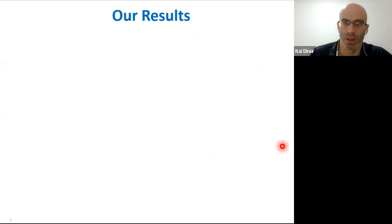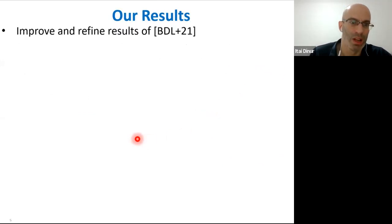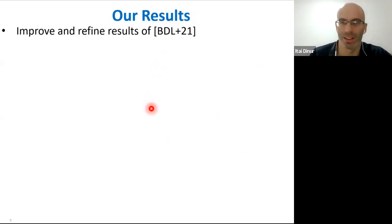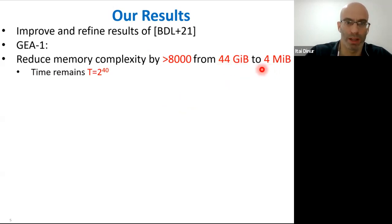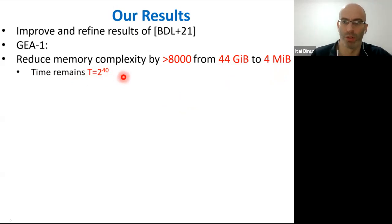Now let's move to our results. What we do in this paper is describe improved and refined attacks compared to the previous paper. For GEA1, we reduce the memory complexity by a factor of roughly 8,000 — from 44 gigabytes down to about four megabytes — while the time complexity remains about 2^40.